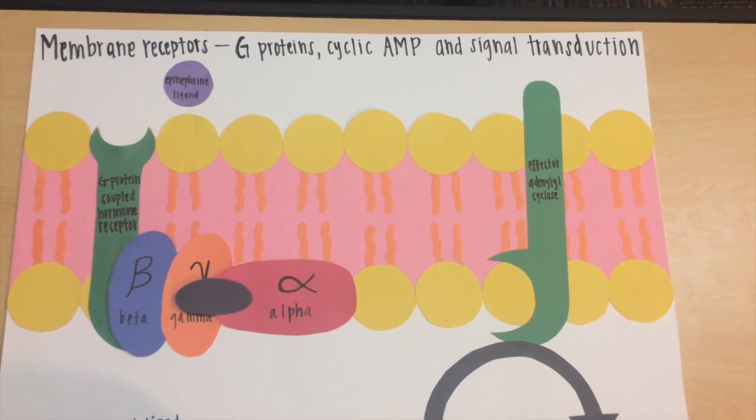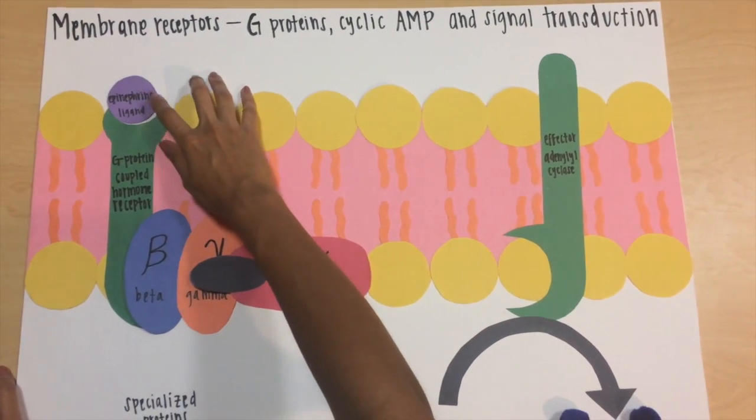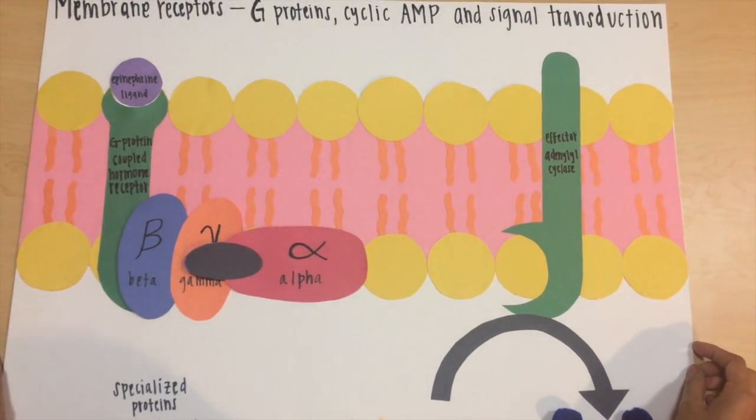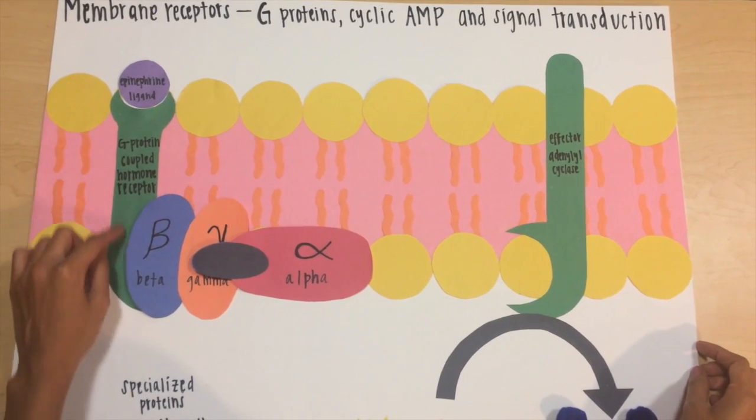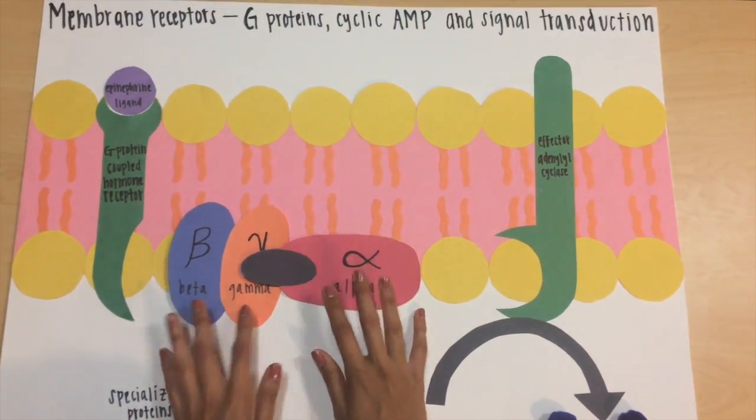A neurotransmitter binds to the receptor to trigger an effect. In this case, the neurotransmitter is epinephrine, which once bound causes protein conformation. The binding of epinephrine to the receptor allows the dissociation of the G-protein from the receptor.